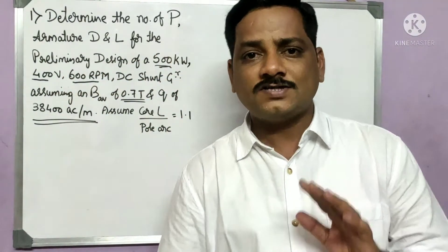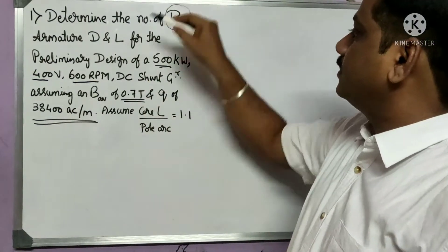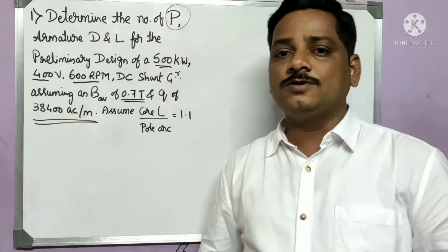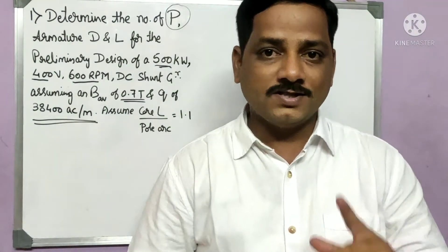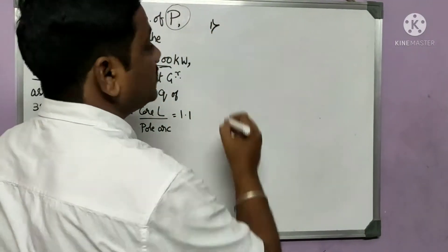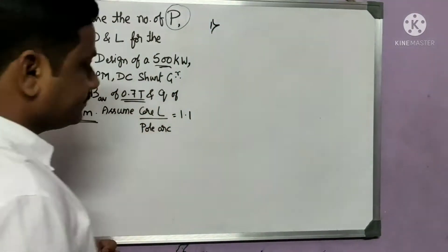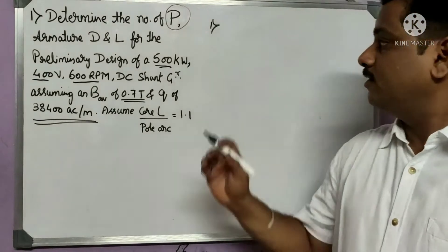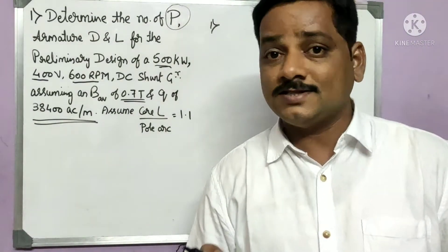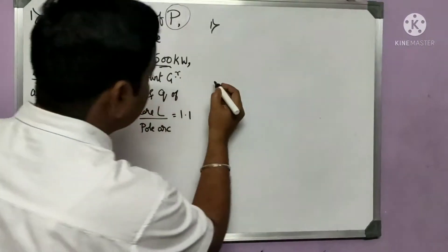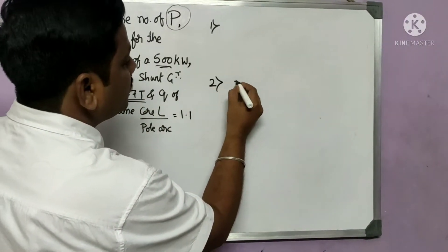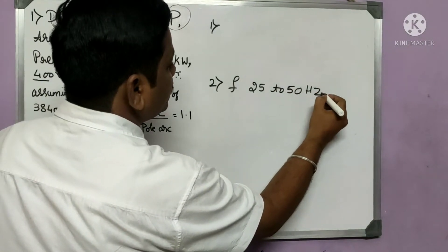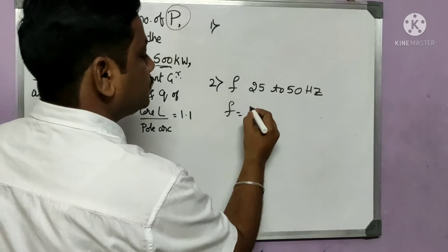To find the number of poles there are two major points to consider. The second point: frequency should lie between 25 to 50 Hz, because F equals P times N divided by 120. Since speed is given in the question, we can make a decision on the number of poles based on frequency.